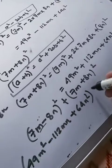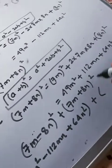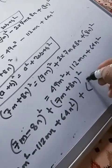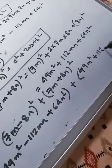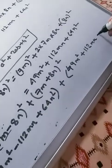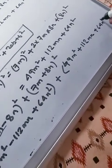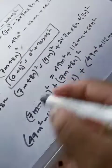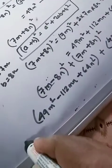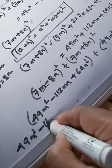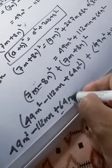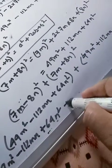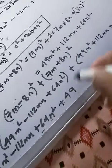Now we'll open the bracket. After opening the bracket we'll get the final answer 49m square minus 112mn plus 64n square, plus again we'll open this bracket also because now outside the bracket we have plus sign so no sign will change.